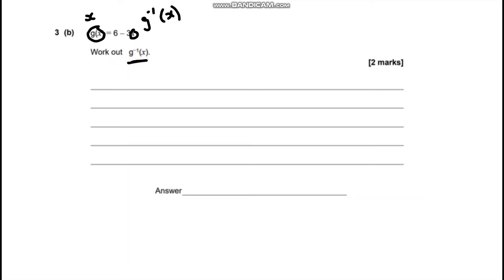And then what we're going to do is rearrange this to get our inverse function on its own. So the first thing we're going to do is write it out: x equals 6 take away 3 lots of the inverse function.